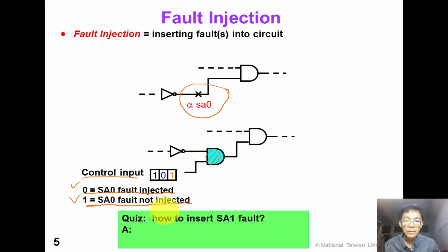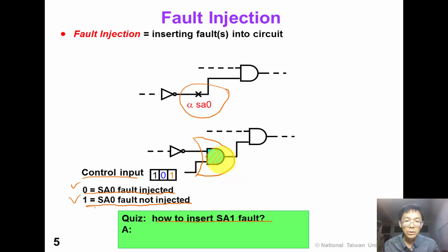Here is a simple quiz. Suppose we want to inject a stuck-at-1 fault — what should we do? The answer is simple: we just change this gate to an OR gate, where control input 1 means that the stuck-at-1 fault is injected.